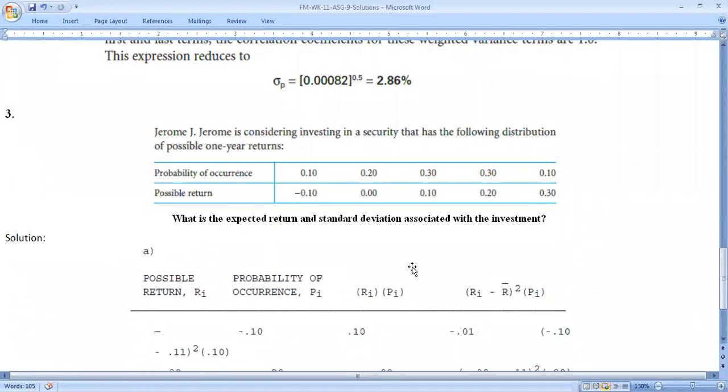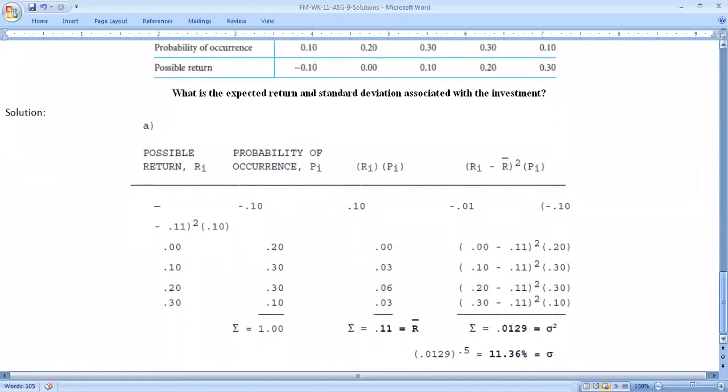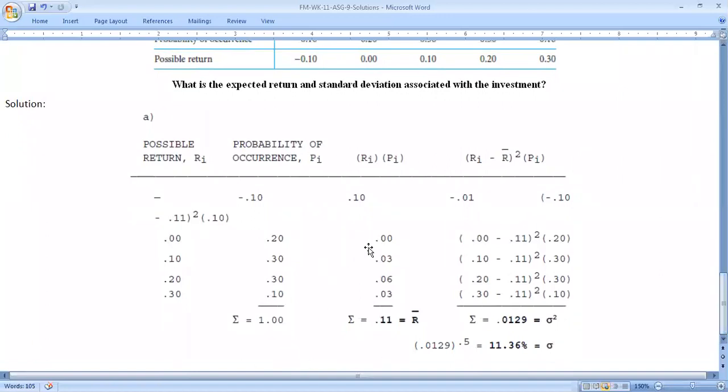The final question introduces investment in a security. We have to calculate the expected return. This is the solution I have given you - multiply by the expected return of 0.10, which is 11%. The standard deviation is 11.36 and another value is 33. This is our class and assignment. We will meet again, Inshallah.